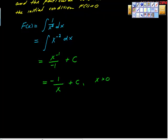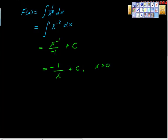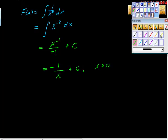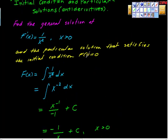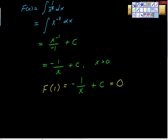Remember we have the condition x is greater than zero. Now we're going to go back to the initial condition and write that in. We're looking for the particular solution when x is 1, so we rebuild the whole thing: negative 1 over x plus C. The condition says that when x is 1, y is 0 — that's where we're getting that idea from. The value of x is 1.